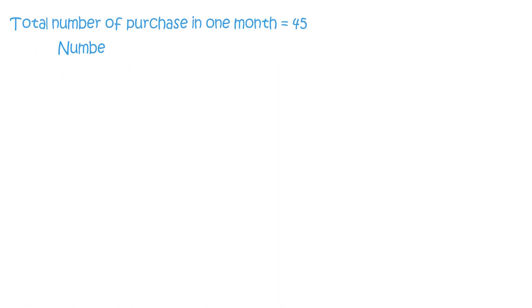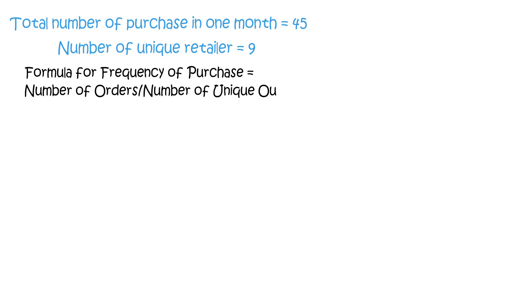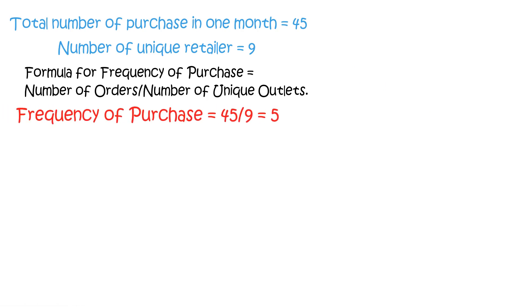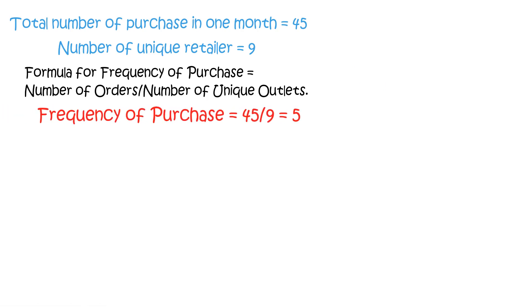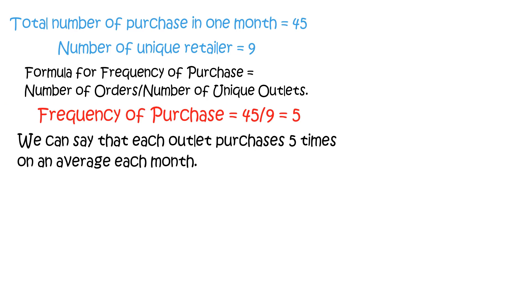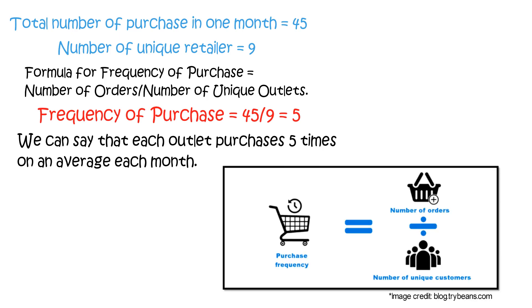Secondly, the total number of purchases in one month is 45 and the number of unique retailers is 9. Finally, the formula of frequency of purchase is equal to number of orders divided by number of unique outlets. Frequency of purchase equals 45 divided by 9, that is 5. Thus, we can say that each outlet purchases five times on average each month.